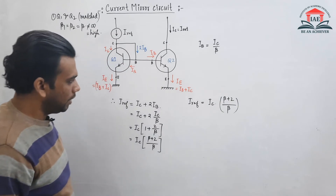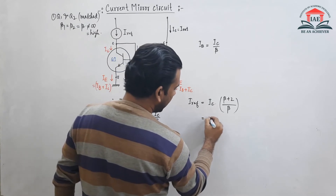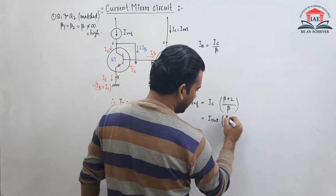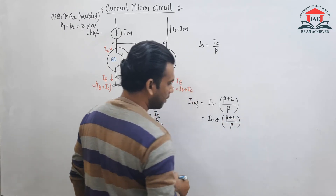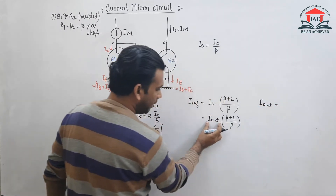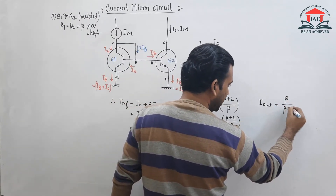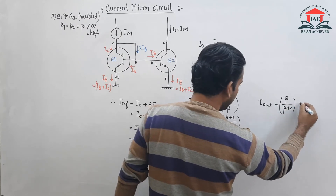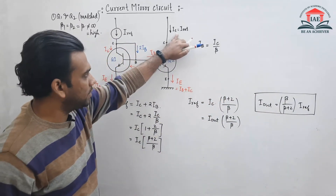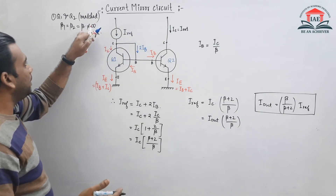Taking IC common: I_reference = IC × (1 + 2/β) = IC × (β + 2)/β. Since IC is the I_out current, we get I_reference = I_out × (β + 2)/β. Therefore, I_out = (β / (β + 2)) × I_reference. This is the output current expression when beta is finite.